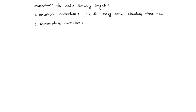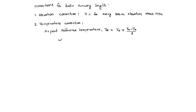For this correction, we should understand two things: what is the airport reference temperature? Airport reference temperature, TR, is given by: TR = TA + (TM - TA) / 3, where TA is the monthly mean of average daily temperature for the hottest month.